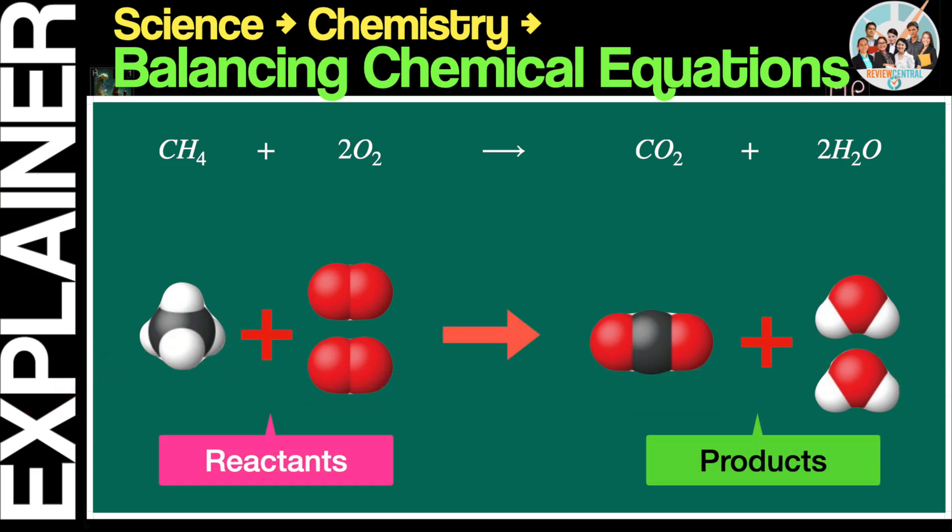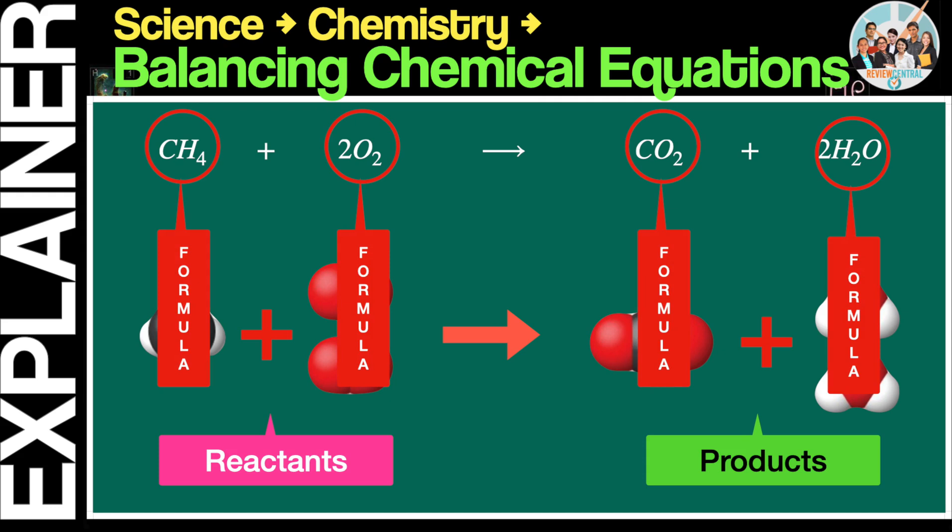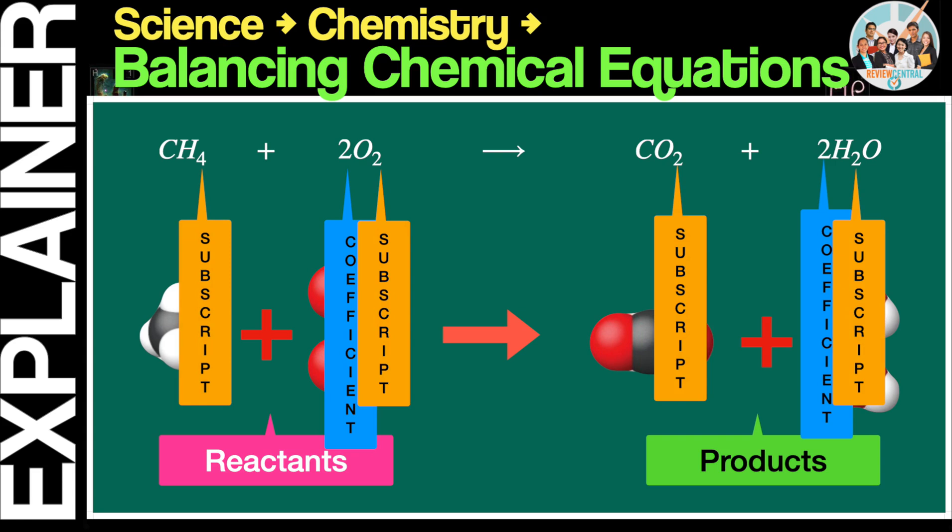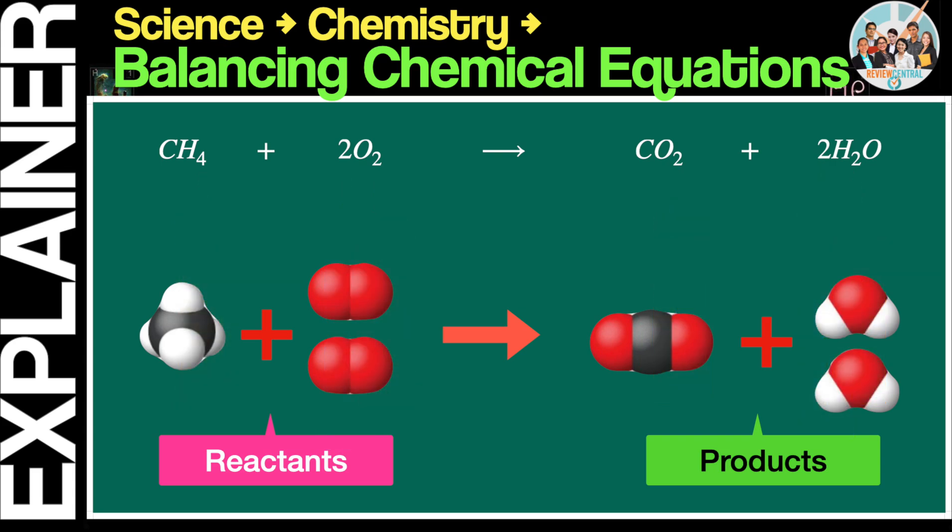In the above illustration, the left side of the arrow is called the reactant side, and the right side is called the product side. CH4 and 2O2 are the reactants, while CO2 and 2H2O are the products. Individually, each of these is called a formula. Note that a formula may contain a single element, example H2, or a combination of elements, that is, a compound, example H2O. The leading 2s in 2O2 and 2H2O are called coefficients. While the lagging smaller and slightly lower 2s are called subscripts.